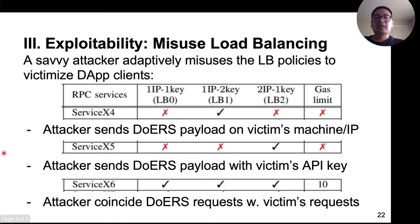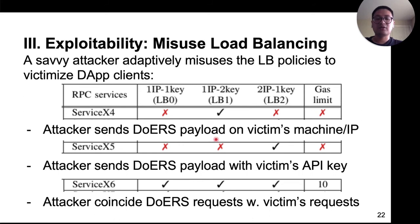Based on each RPC service's measurement result on load balancing, we propose different attack strategies to victimize a DApp client. For example, to attack a victim in ServiceX4, the attacker can send attack payloads from the victim's machine. To attack a DApp client in ServiceX5, the attacker can send attack payloads with the victim's API key. And to attack a victim client in another service, the attacker can send payload to coincide with the victim's request.